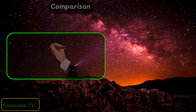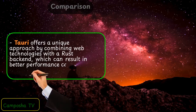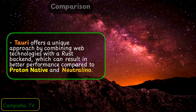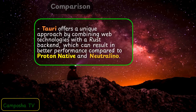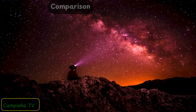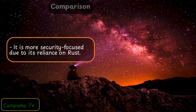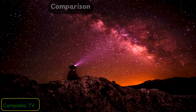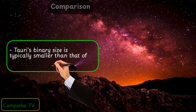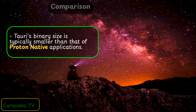Torii offers a unique approach by combining web technologies with a Rust back-end, which can result in better performance compared to ProtonNative and Neutralino. It is more security-focused due to its reliance on Rust. Torii's binary size is typically smaller than that of ProtonNative applications.